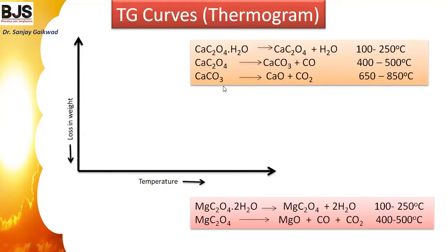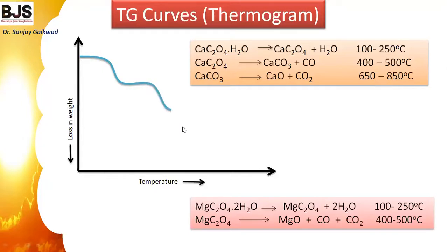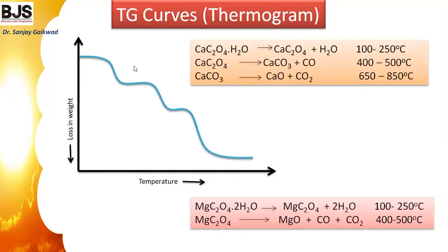On continuous heating, at 650 to 850 degrees Celsius, calcium carbonate is converted to calcium oxide with release of CO2 gas. As the heating rate increases at 3 to 5 degrees Celsius per minute, the pyrolysis curve shows: first loss at 100 to 250°C, second loss at 400 to 500°C, and third loss at 650 to 800°C. The third step removes CO2, the second step removes CO, and the first step removes water from calcium oxalate.